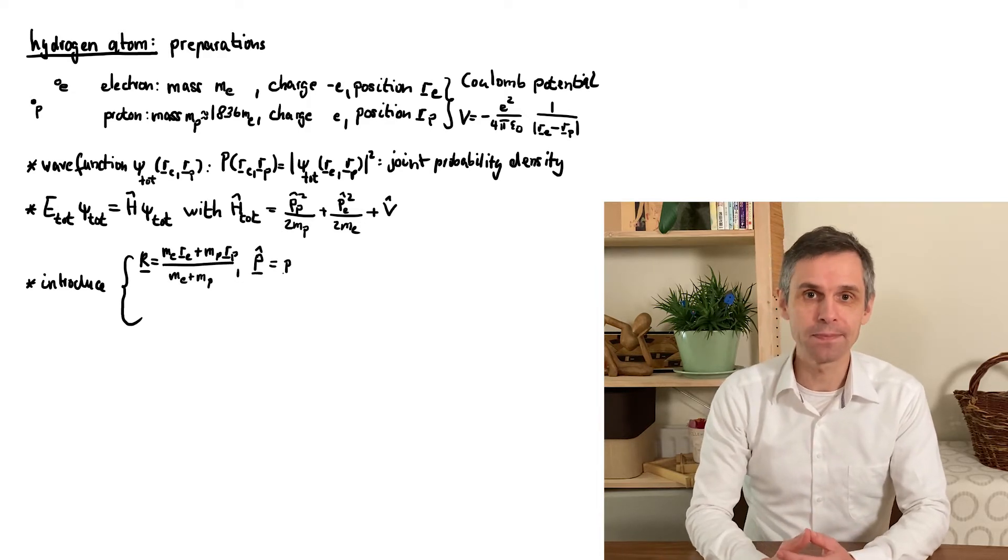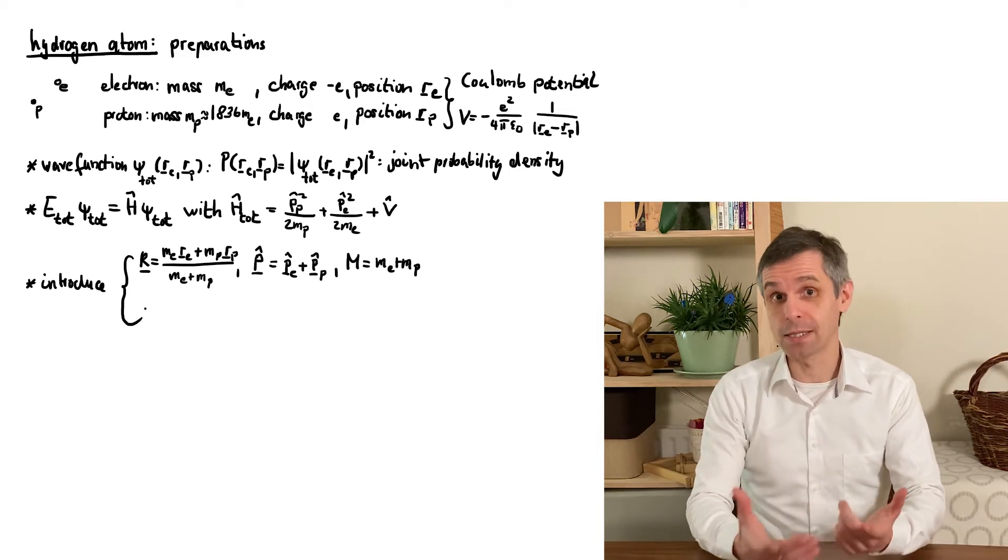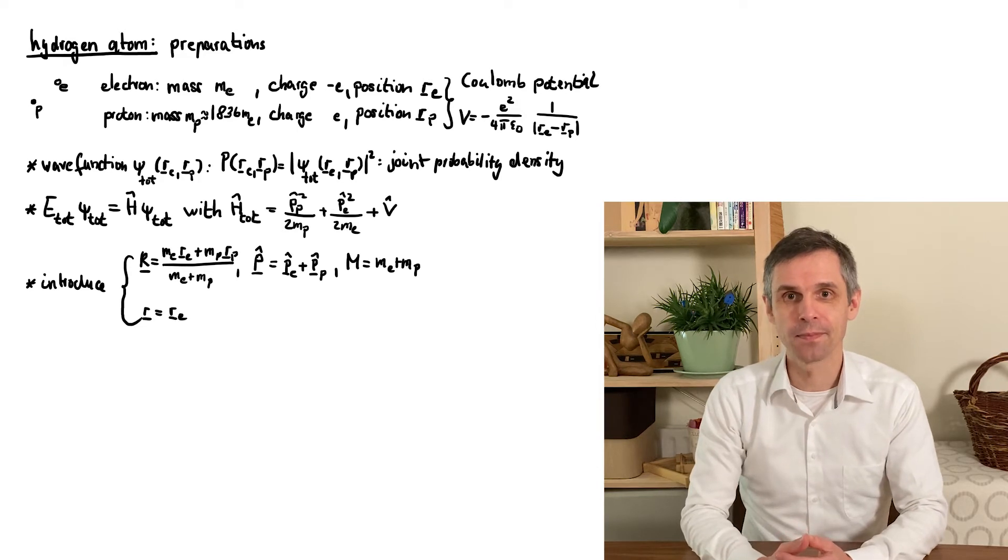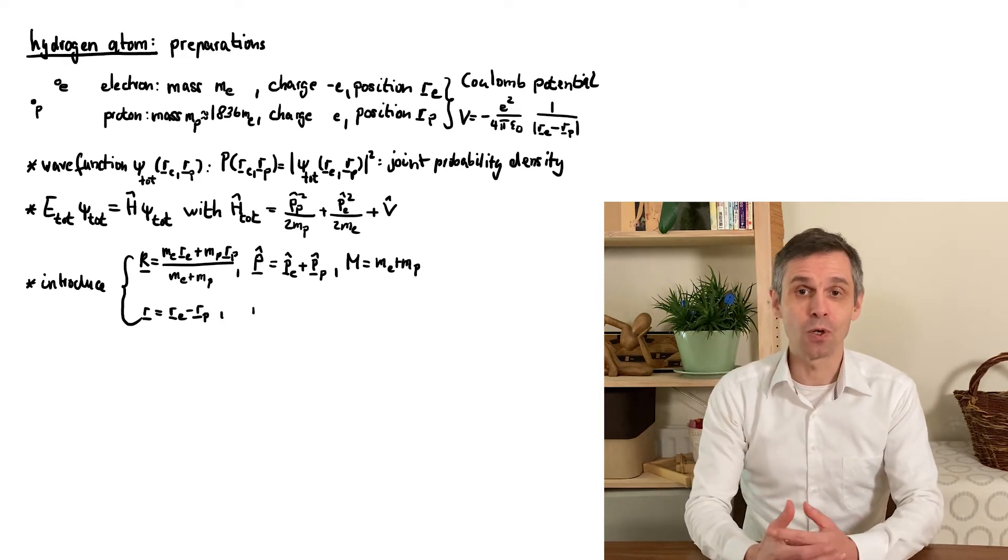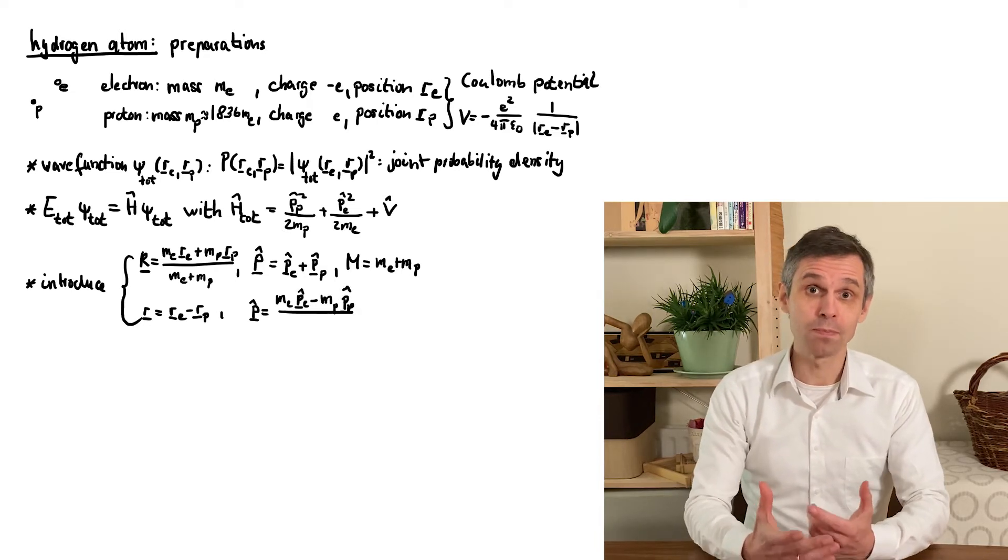Along with the total momentum and the total mass, which classically describes the motion of the atom as a whole. And then we have the relative coordinate and the corresponding momentum, as well as the so-called reduced mass μ.